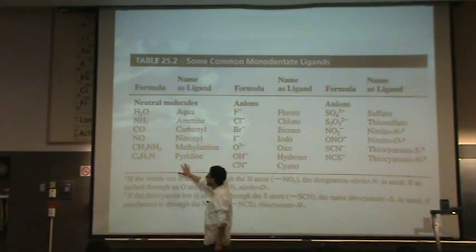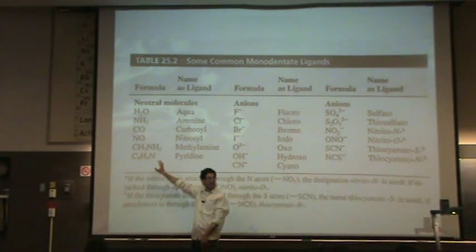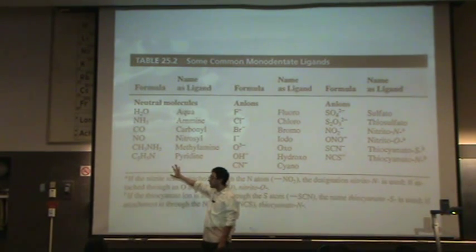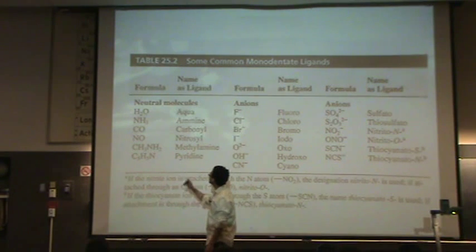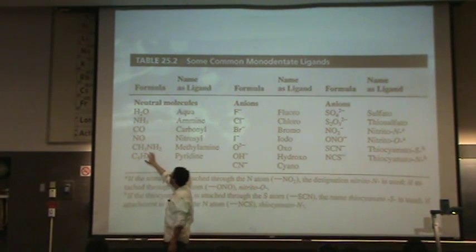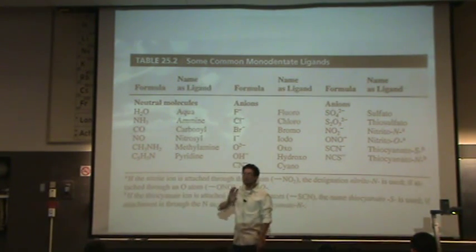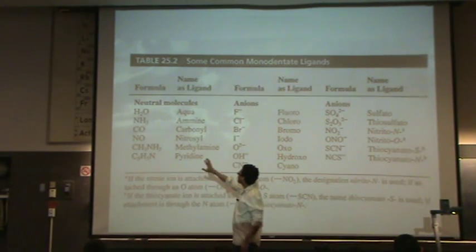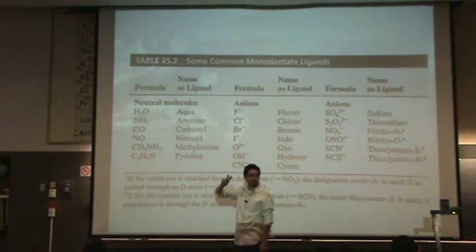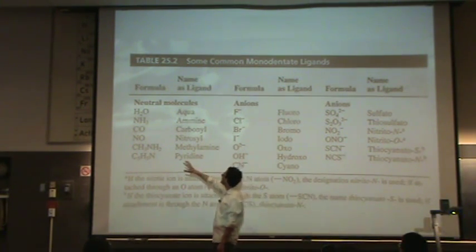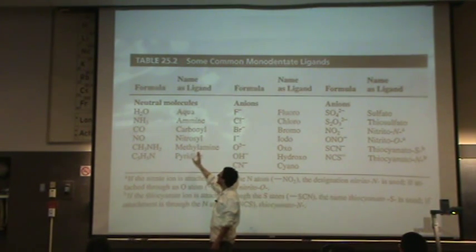In this column is the neutral ligands. These have no charge, they have lone pairs, they're Lewis bases, but they have no charge. That's water, ammonia, carbon monoxide, and nitrogen monoxide. But they have special names you must memorize. Water is aqua. Ammonia is amine with two M's, you've got to spell that right. Carbon monoxide is carbonyl, and nitrogen monoxide is nitrosyl.